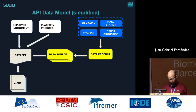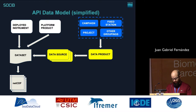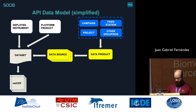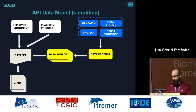We have two main concepts in the underlying data model: data source and data products. A data source contains information related to how we can access the data — through a set of URLs pointing to the different services we can use. Currently, a data source can represent the data generated during the deployment of an instrument on a platform, or the data of a platform product obtained from the combination of various instruments during a specific period of time, regardless of how many deployments are involved. A data product is simply any grouping of data sources — for example, products corresponding to campaigns, projects, or fixed stations. We are also planning to develop new data source types to represent data from models and images.